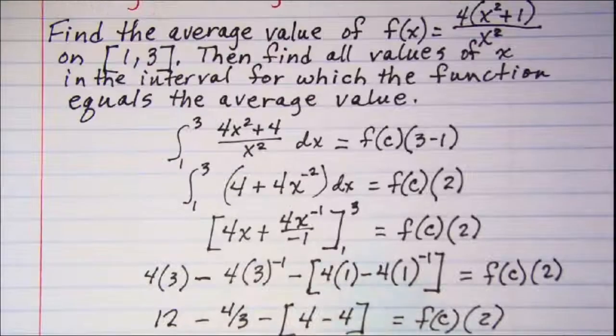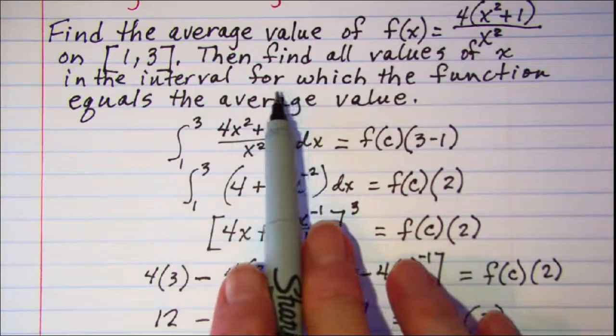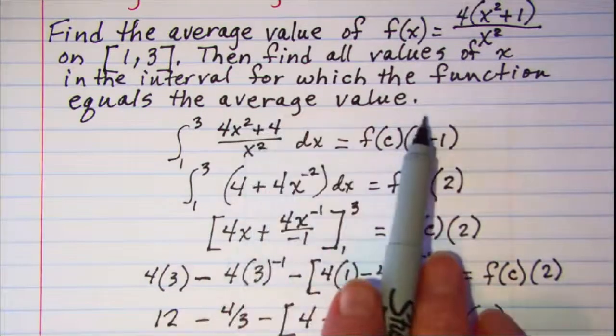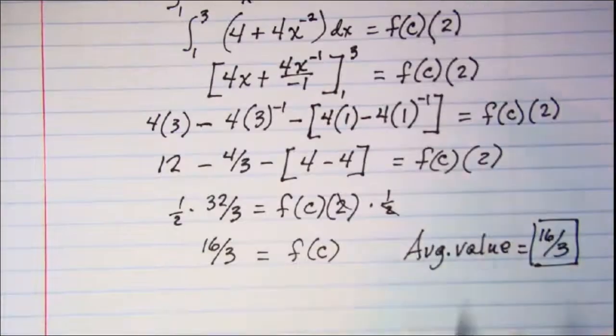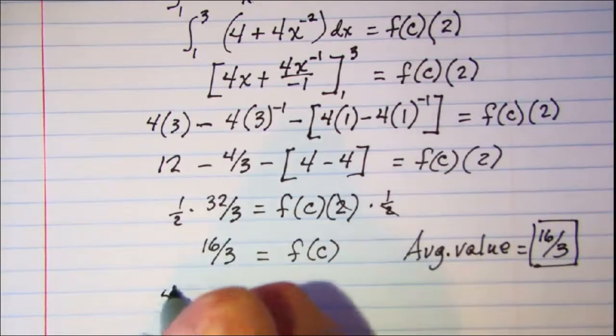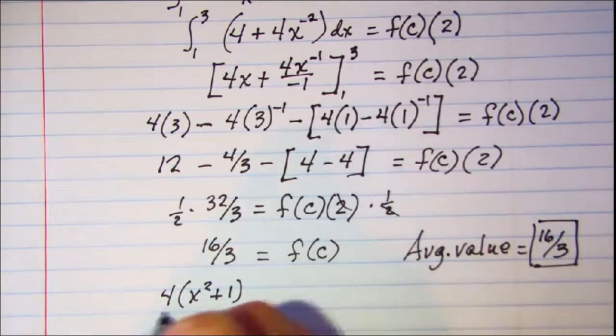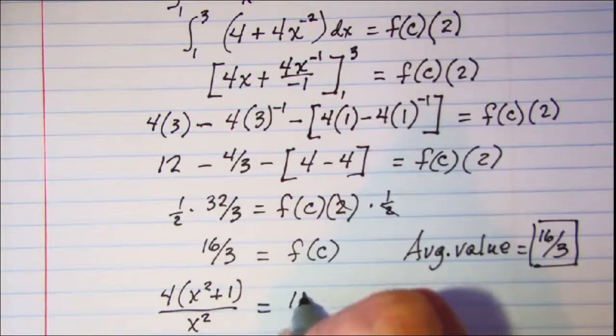Then I am asked to find all values of x in the interval from 1 to 3 for which the function equals the average value. So my function is given up here and copy that. 4 times the quantity x squared plus 1 over x squared and that's equal to 16 thirds.